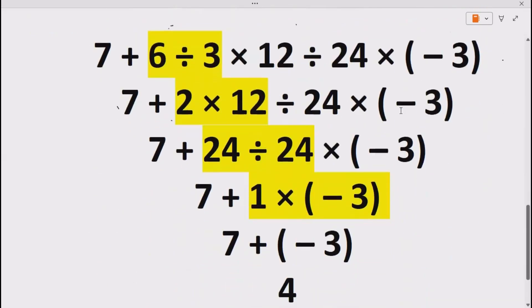Now let's see how we can solve our expression using this method. So we are given 7 plus 6 divided by 3 times 12 divided by 24 times minus 3. Now first we have to do division according to BODMAS and PEMDAS rule. Now 6 divided by 3 gives us 2 and all the things remain as it is.